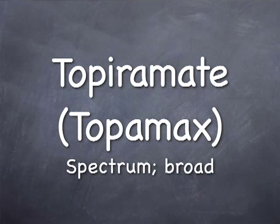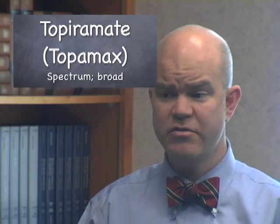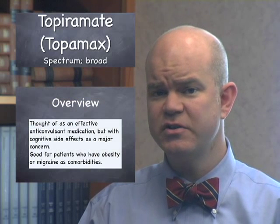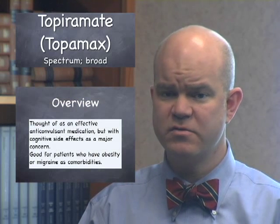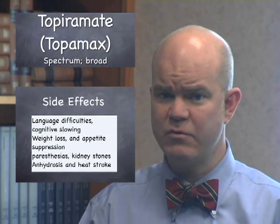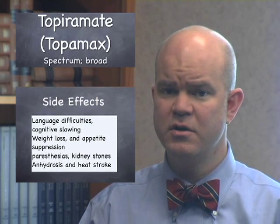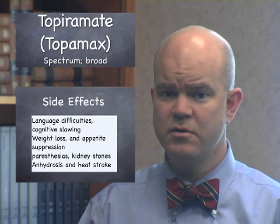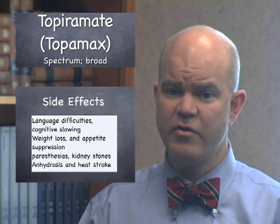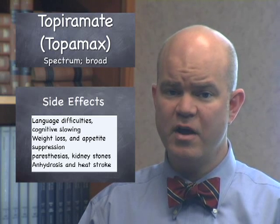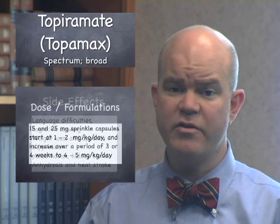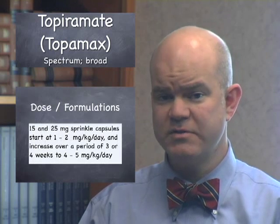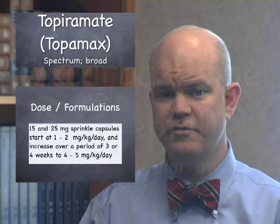Topiramate or Topamax is another broad spectrum agent, thought of as an effective anticonvulsant, although with occasionally concerning cognitive side effects including word-finding difficulties and language problems. Other side effects include kidney stones and sometimes weight loss. It can also be effective for migraines, making it useful in patients who are obese or have comorbid migraine headaches. It also comes as a sprinkle formulation which can be added to foods.